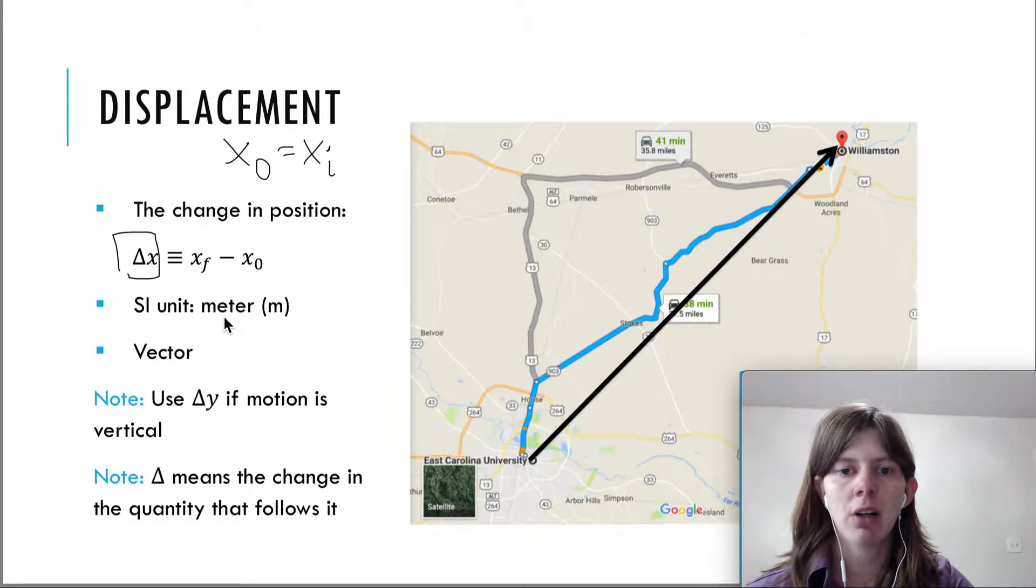So it's also measured in meters, but it's different from distance because it's a vector. We talked about a vector has a magnitude. There's a certain distance traveled here. Maybe it was 20 miles, but there's also a direction - you traveled northeast.